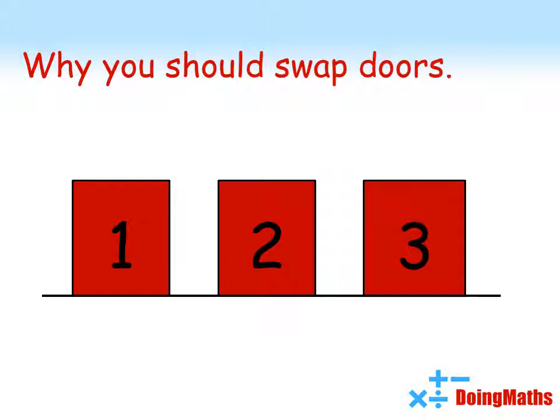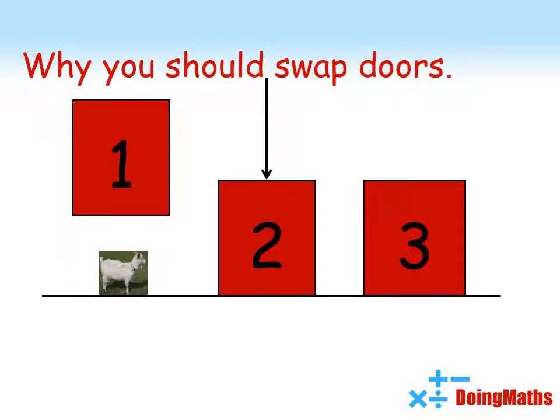So, you choose a door. For our example, let's choose door two again. The TV host opens a door to reveal a goat. He knows where the goats are, so the open door will always be a goat. This leaves two doors, and we know that one has a car behind it, the other has a goat.